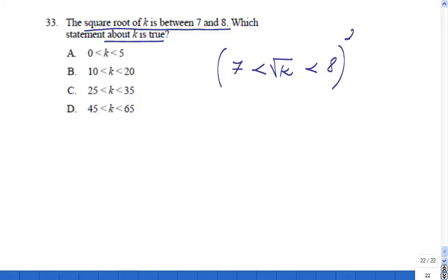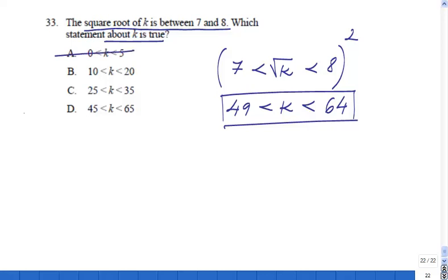As you can see everything is positive here so nothing changes. Let's square 7, that would be 49 which should be less than square root of K squared, which is K, which should be less than 64. So what I know now is that K is between 49 and 64.